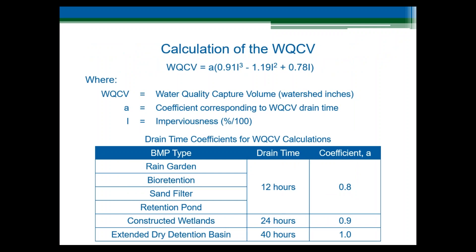Given that background, let's examine the equation developed by the Urban Drainage and Flood Control District to calculate the water quality capture volume. The first things to note are the input parameters and units. The WQCV has units of watershed inches. To convert to an actual volume with units of length cubed, you can multiply by the drainage area. The next variable is the A coefficient. This is an adjustment factor that takes into consideration the drain time of the stormwater control measure. Shorter drain times have smaller A coefficients and result in smaller water quality capture volumes, because of more efficient routing through the control measure with a shorter drain time. A coefficients are shown on the table on this slide, from the Urban Storm Drainage Criteria Manual, Volume 3. The final input parameter is the imperviousness. Be sure that you express this as a decimal fraction in the equation — if you enter a percentage, you will get some crazy results. Imperviousness is usually measured from aerial photography or site plans using AutoCAD or GIS.